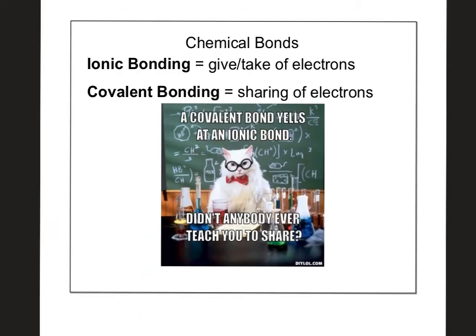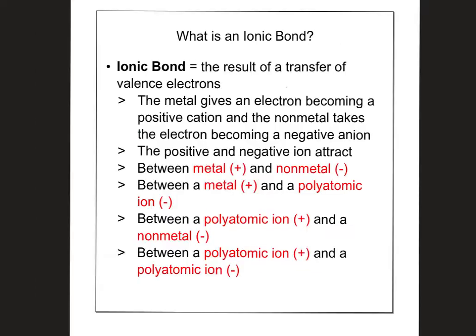So let's start with some simple definitions. Ionic bonding occurs when we have one substance that gives electrons, and the other substance takes those electrons. Covalent bonding occurs when two atoms share their electrons with each other. And I got a nice little joke. A covalent bond yells over at the ionic bond, Didn't anybody ever teach you to share? Ha, so funny.